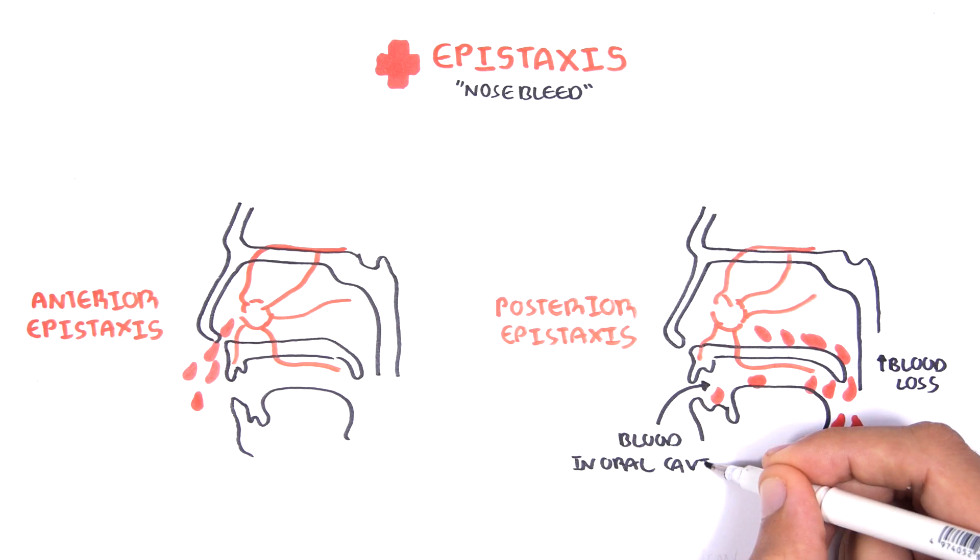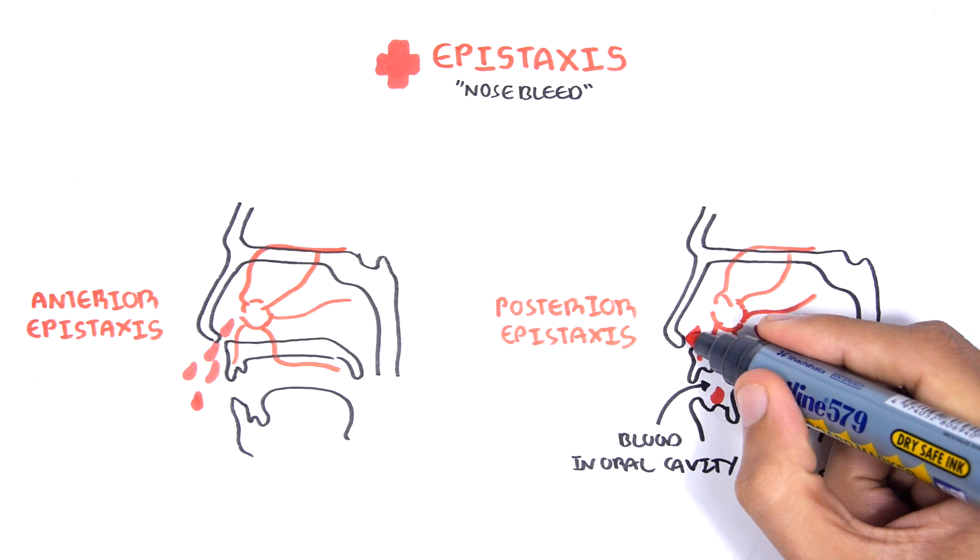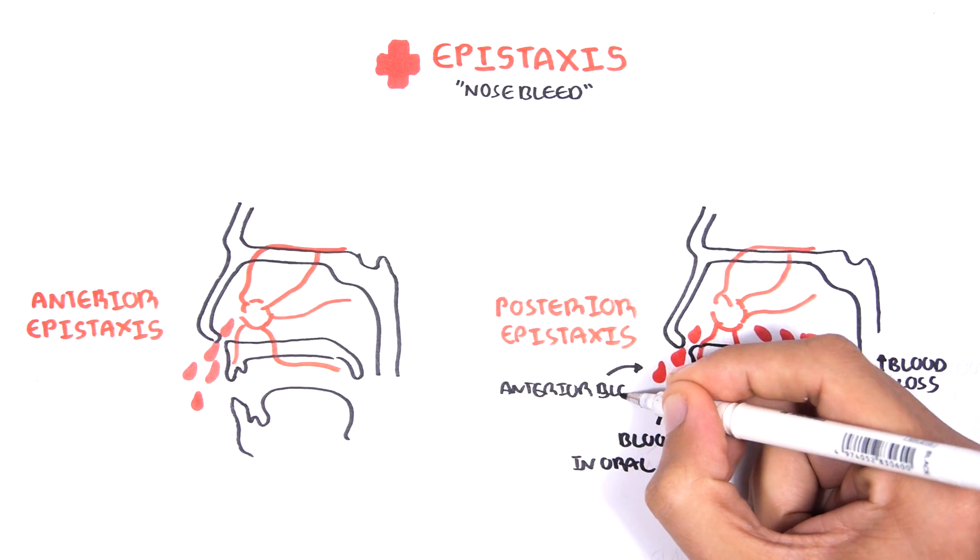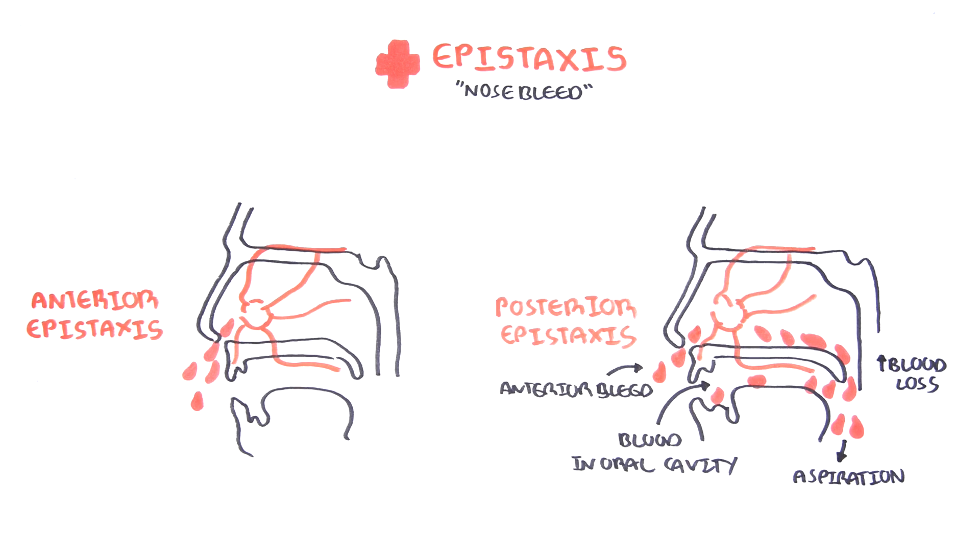It is a posterior epistaxis if you can see blood in the oral cavity as well as coming out of your nose. Again, posterior nosebleeds are more serious and bleed a lot more.